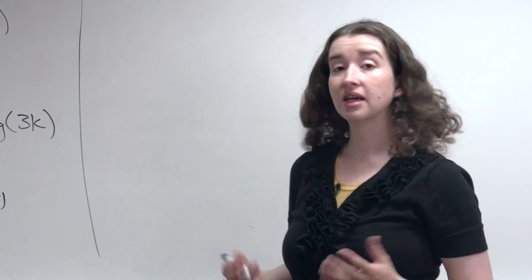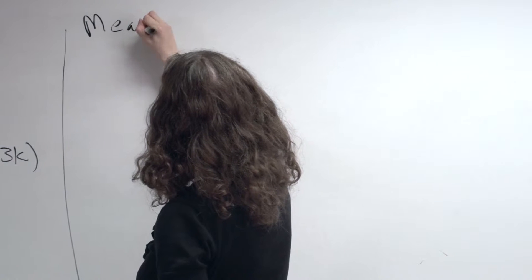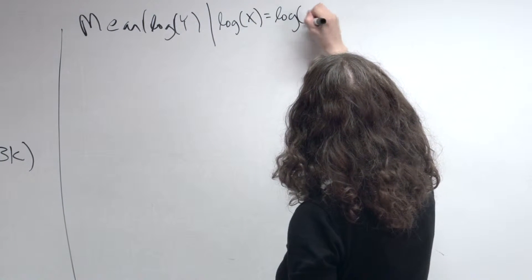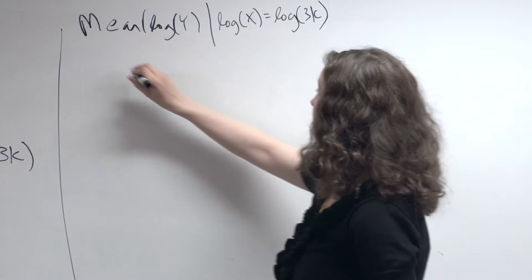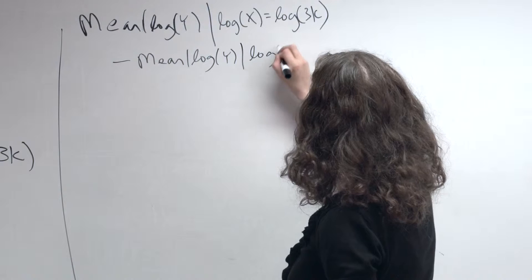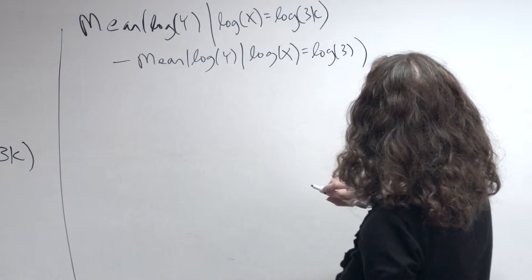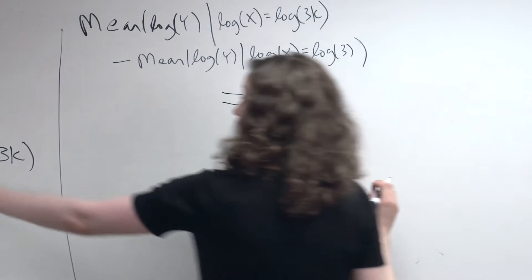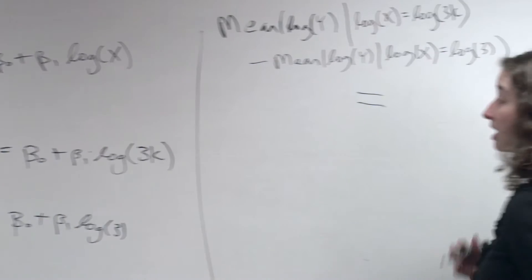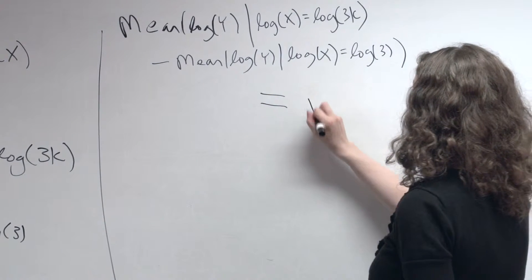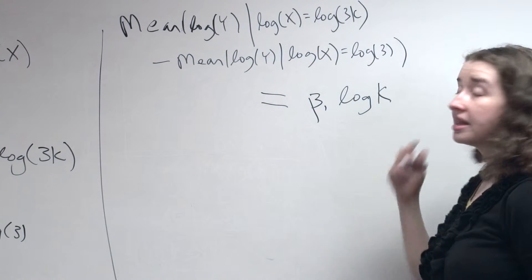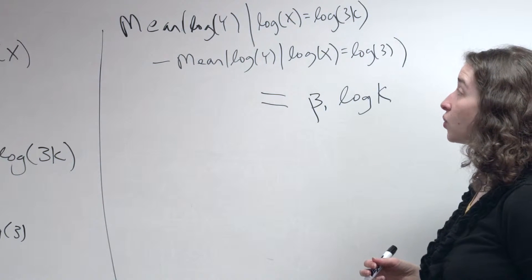Now I'm going to subtract the two left sides and subtract the two right sides. I have the mean of the log of y given log x equals log(3k), minus the mean of the log of y when log x equals log(3). That whole thing equals beta0 minus beta0, which is 0, plus beta1·log(3k) minus beta1·log(3). And we showed previously that beta1·log(3k) minus beta1·log(3) is just beta1·log(k). So we've simplified the right side, following what we did when we had logged only x.